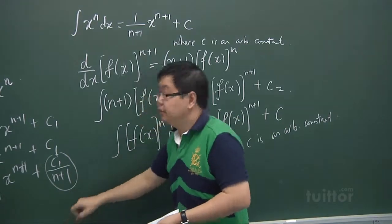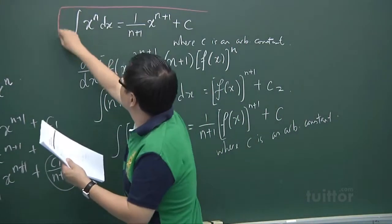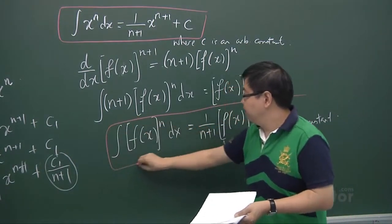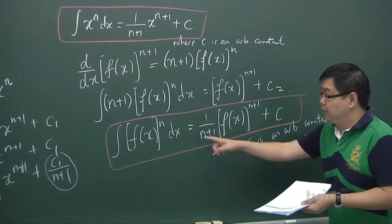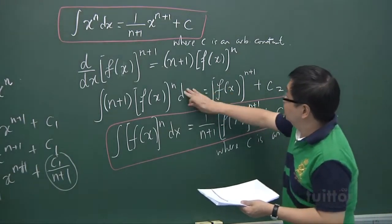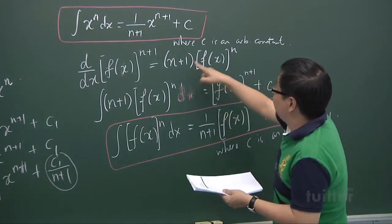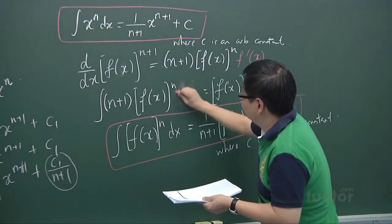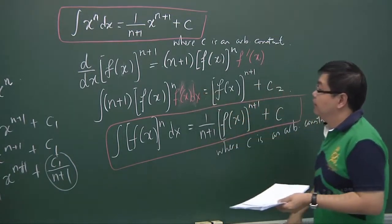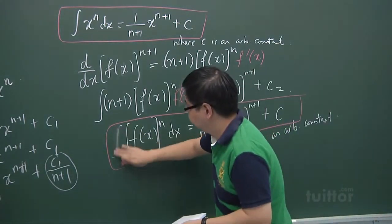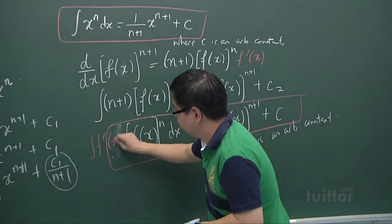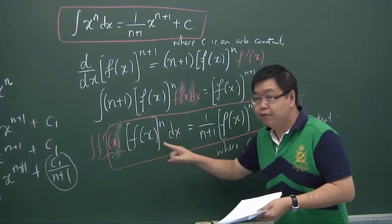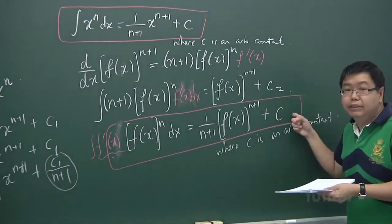So here we have two results. The first result: when you integrate x to the power of n, you obtain 1 over n plus 1 times x to the power of n plus 1 plus a constant c. The second result: integrating a general function f(x) to the power of n — I should note I initially missed the f'(x) term. The correct form requires an f'(x) in front of f(x)^n dx, giving f(x)^(n+1) over n plus 1 plus c. This second result is also given in your handout.